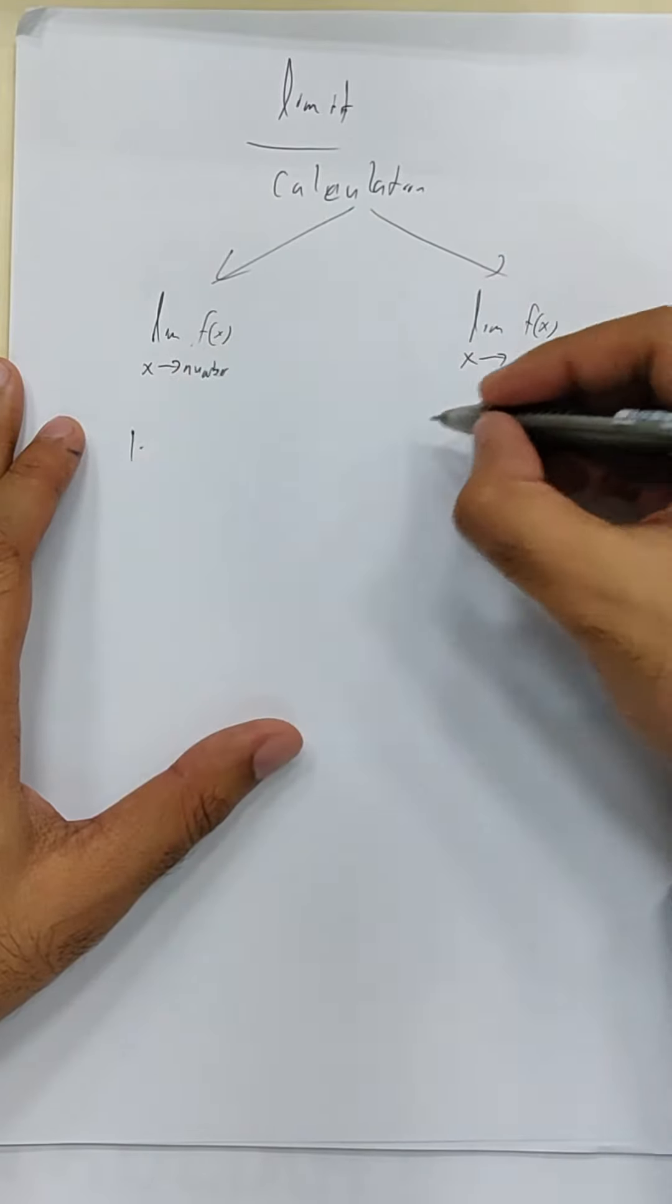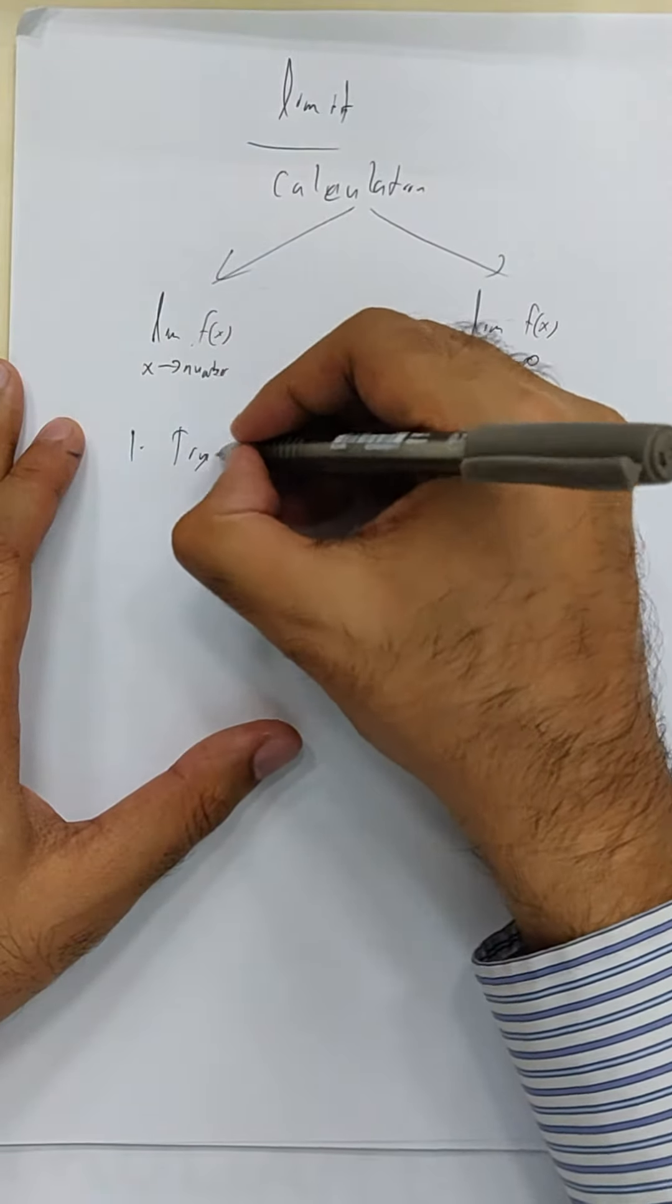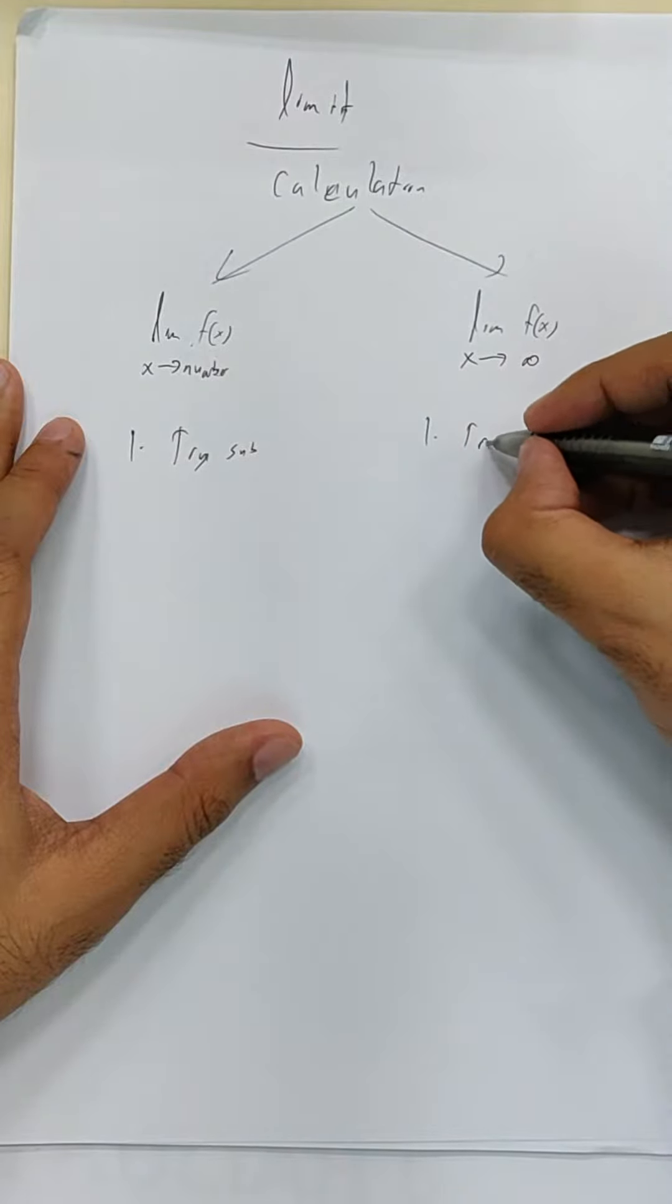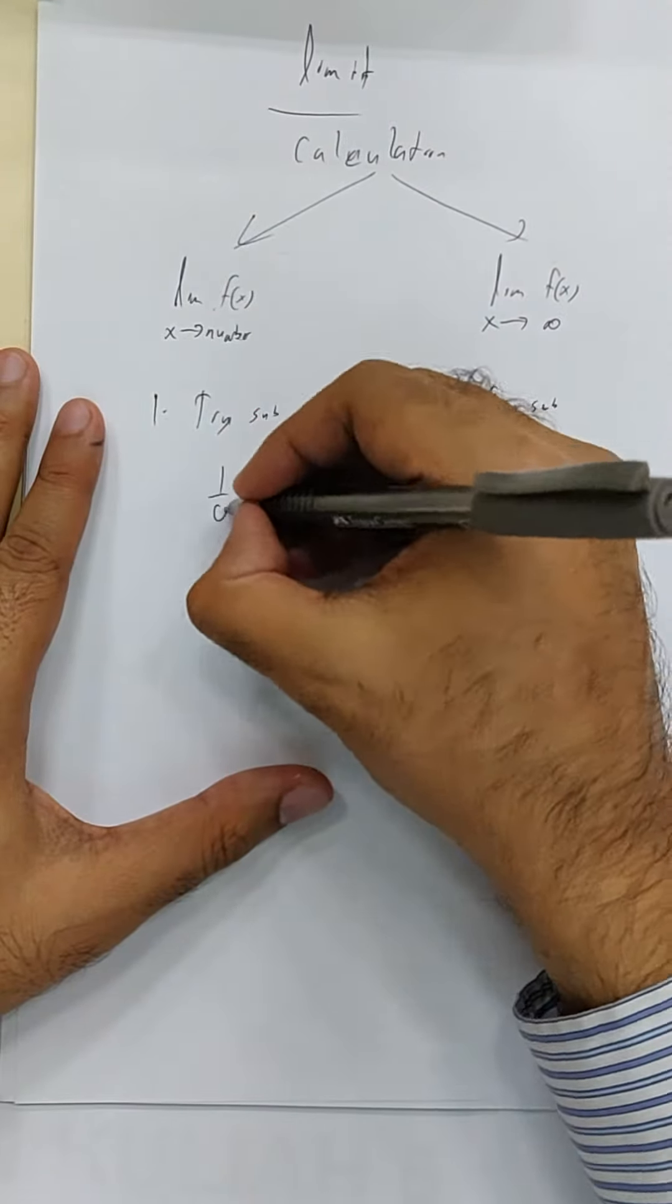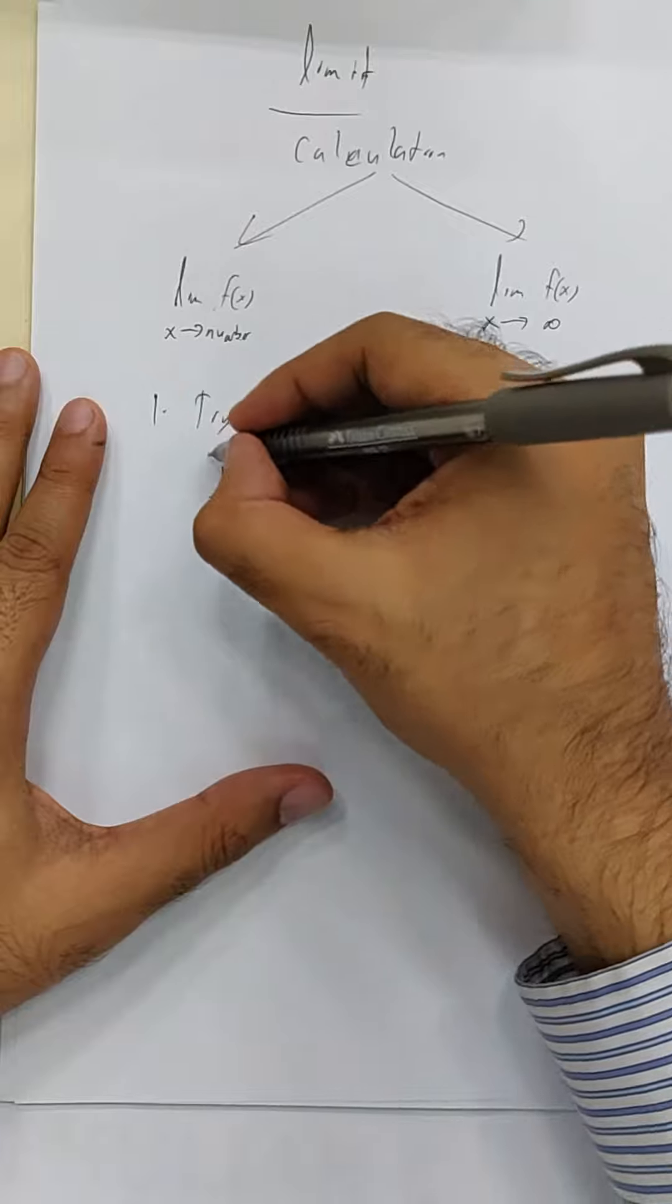Well, of course, firstly we say try sub first. If it doesn't work, when does it work for a number? Then you got yourself 1 over 0. You want to avoid.